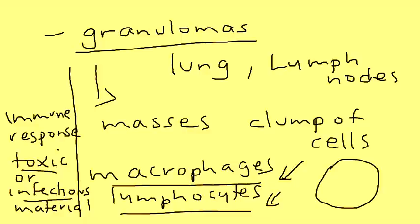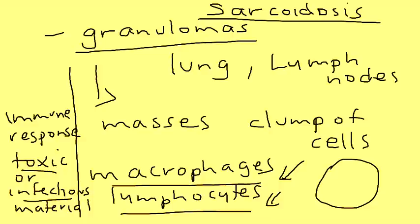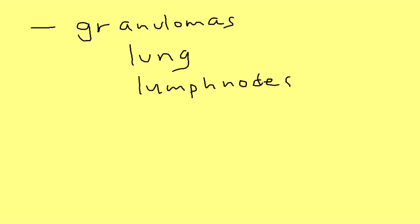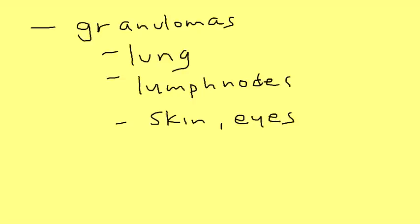The problem with sarcoidosis is that the body is unable to stop this response, and it spreads from organ to organ. That's really the main pathophysiology. As a result, you get these granulomas in different parts of the body — most commonly the lungs and lymph nodes — and also the skin and eyes. These granulomas have a special name: they're called non-caseating granulomas, or non-necrotizing granulomas.